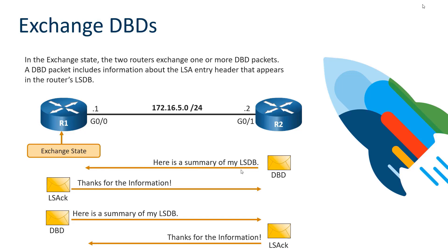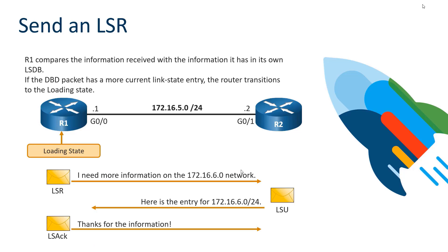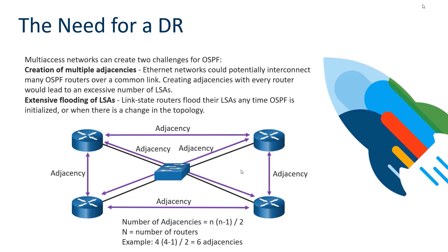OSPF likes to be reliable. R1 then sends its own summary of its link state database, and R2 acknowledges receipt as well. After the routers have viewed each other's DBD packets, they respond with LSRs and LSUs. An LSR is a link state request — we can ask for more information on specific network entries seen in the DBD packets. The receiving router responds with an LSU, a link state update, providing the requested info. With acknowledgements throughout, after all those LSRs and LSUs, you've reached full convergence.